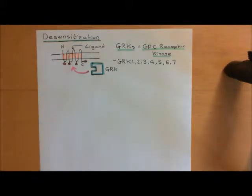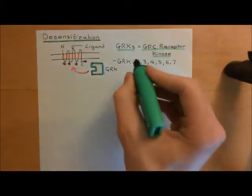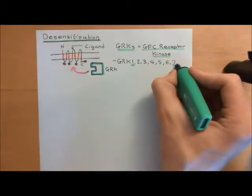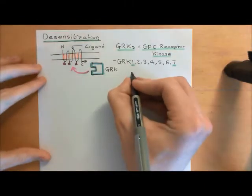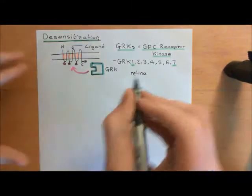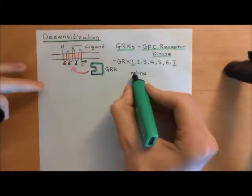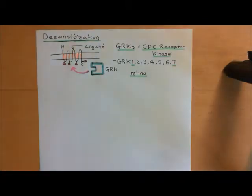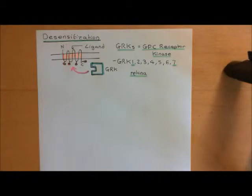GRK1 and GRK7 are only found in the retina, and they play extremely important roles in desensitizing rhodopsin receptors. That's really important in desensitizing your retina to bright light — which is why, when you go into a really bright place, you eventually get used to it, because your retina is becoming desensitized to light by desensitizing the rhodopsin receptors.